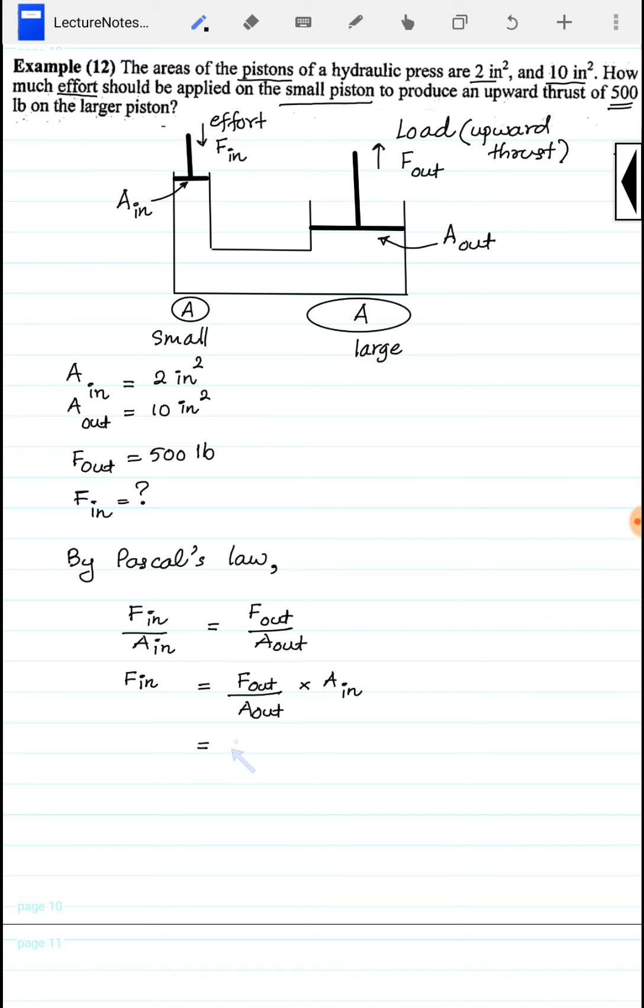F_in equals 500 pounds times 2 square inches divided by 10 square inches. This gives us 500 times 2 divided by 10, which equals 100 pounds. So the force on the small piston is 100 pounds.